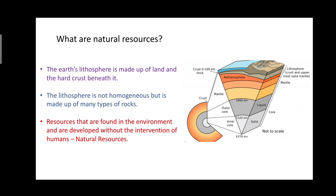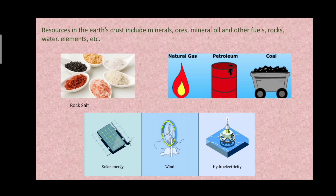Natural resources are those resources that are found in the environment and are developed without the intervention of humans. They include minerals, ores, fuels, rocks, elements, etc. For example, rock salt — deposits of common salt are also found in the earth's crust. Rock salt is used in food and for medicinal purposes. Then we have fossil fuels, which are the most demanded, non-renewable, and expensive resources.